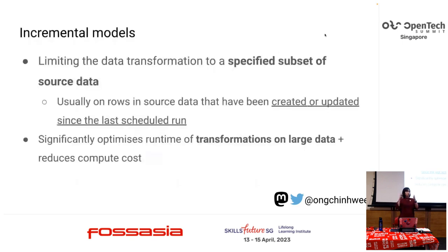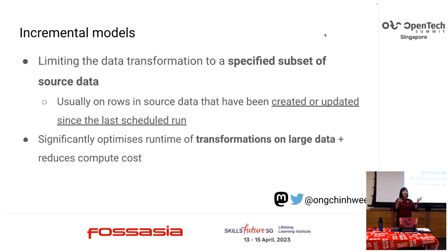To complete the picture, we have incremental models. These limit data transformation to a specified subset of source data — typically capturing only records that have been newly created or updated since the last scheduled run. This avoids redundant work and significantly optimizes runtime for large datasets. That's why you may want to use an incremental approach instead of a full refresh.